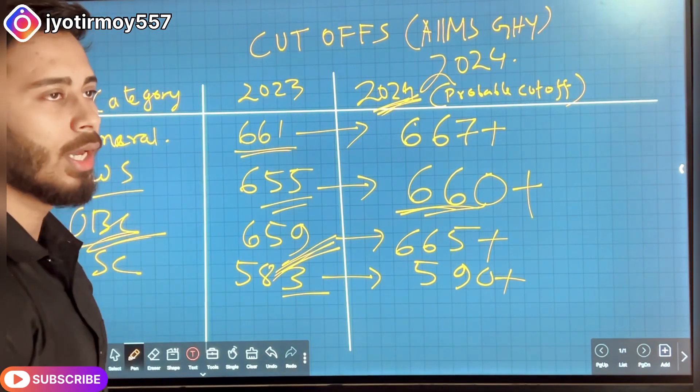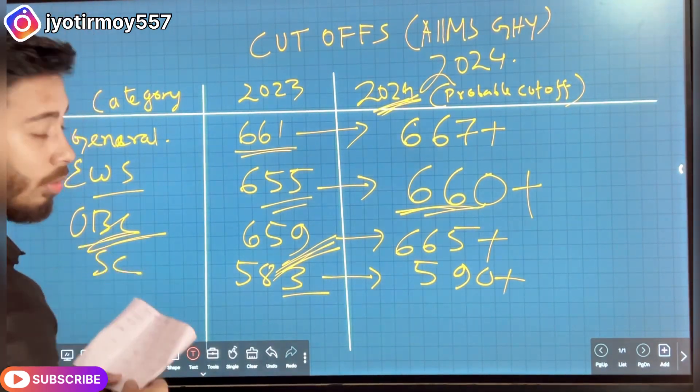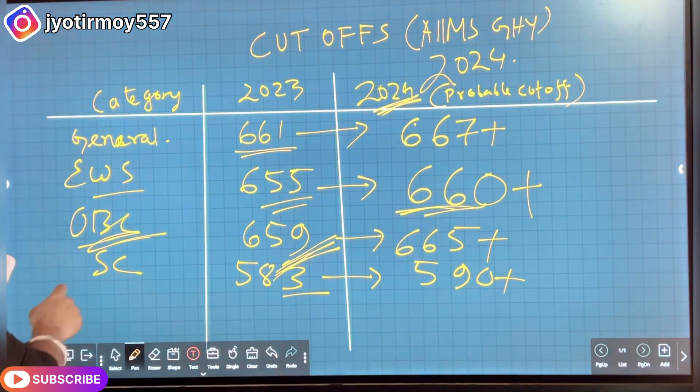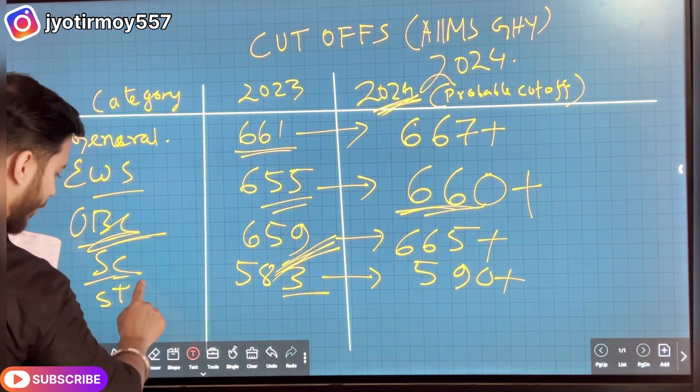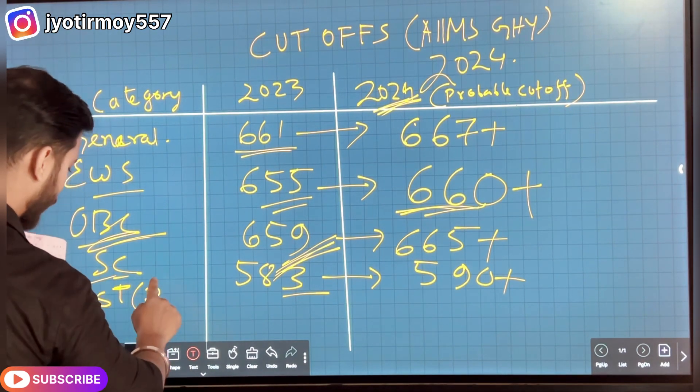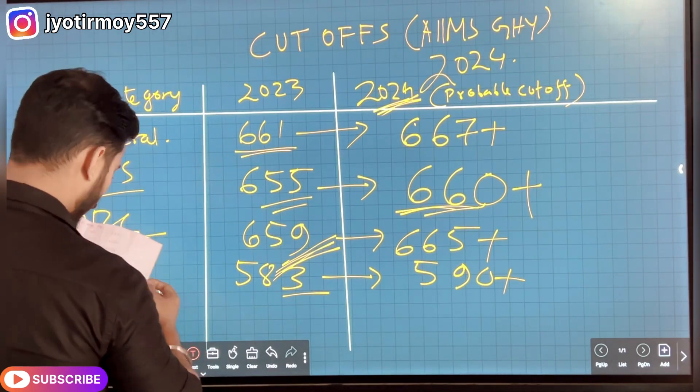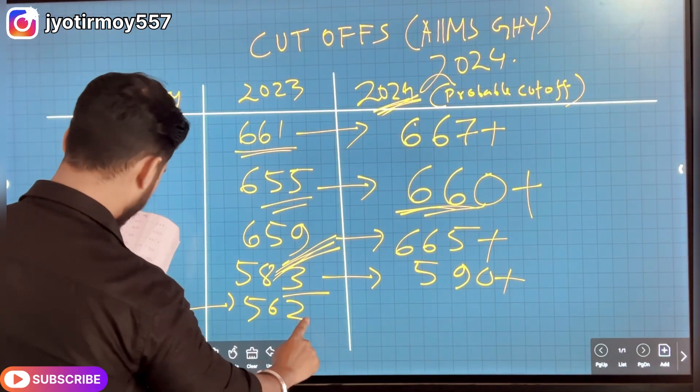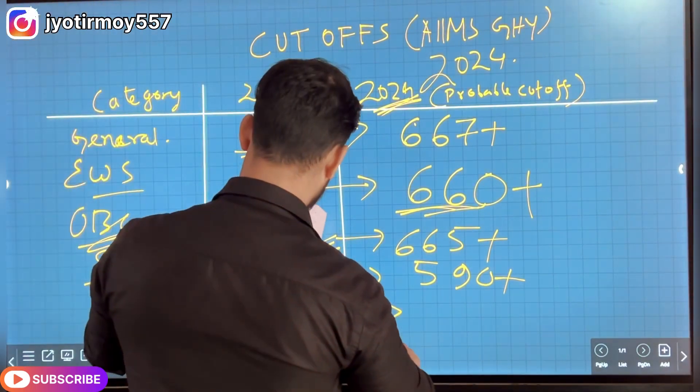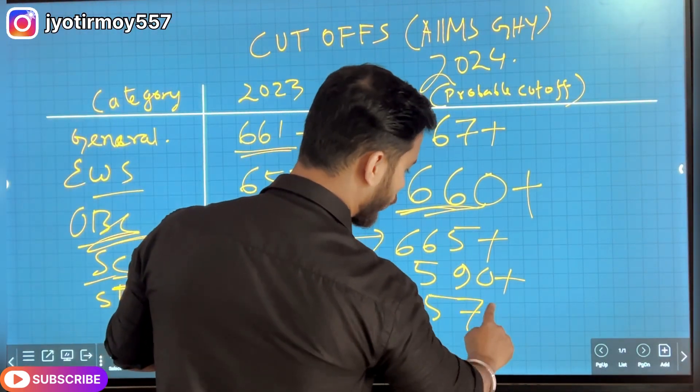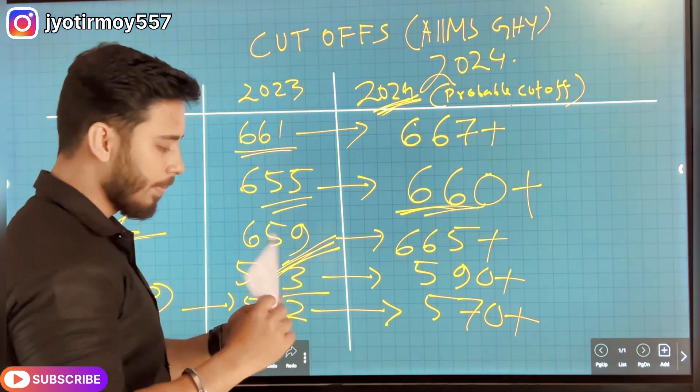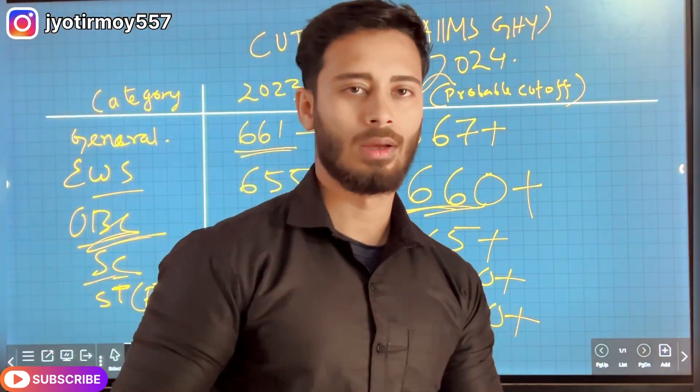Yes, 590 plus. So for ST the cutoff will be 590 plus.